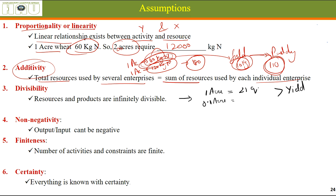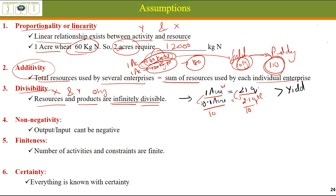The third assumption is Divisibility: resources and products are infinitely divisible. Our inputs and output quantities are infinitely divisible. For example, one acre of wheat gives 21 quintals of yield, so 0.1 acre gives 2.1 quintals — divided by 10, the output divides itself by 10 as well. Both inputs like land and outputs like the product can be divided.